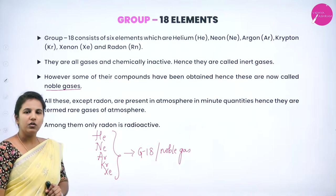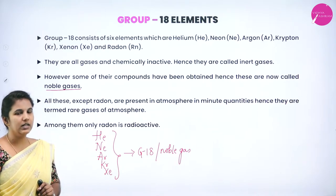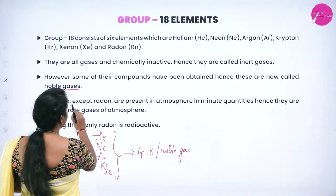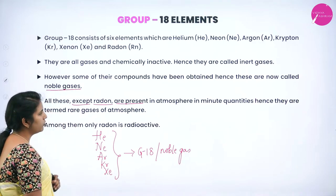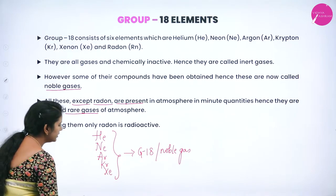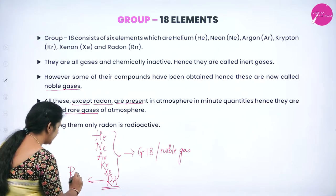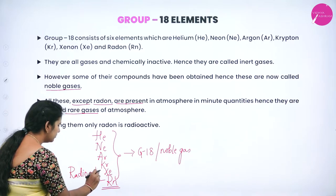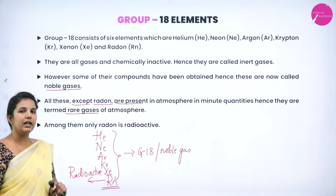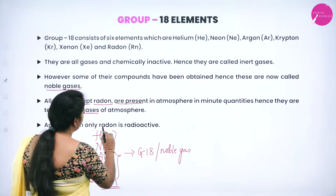Why are they known as noble gases? All these gases are present in the atmosphere in very small extent. All elements except radon are present in the atmosphere in very minute quantities; hence they are also known as rare gases. After xenon, we have radon, which is the only element in this group that is radioactive in nature.